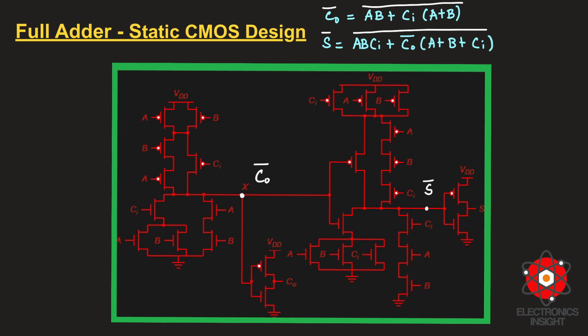This full adder design uses 28 transistors in total, including the CMOS inverters needed to get the final carry out and sum outputs. It consumes a large area. Therefore, in subsequent videos, we will explore other implementations of the full adder that reduce the transistor count.